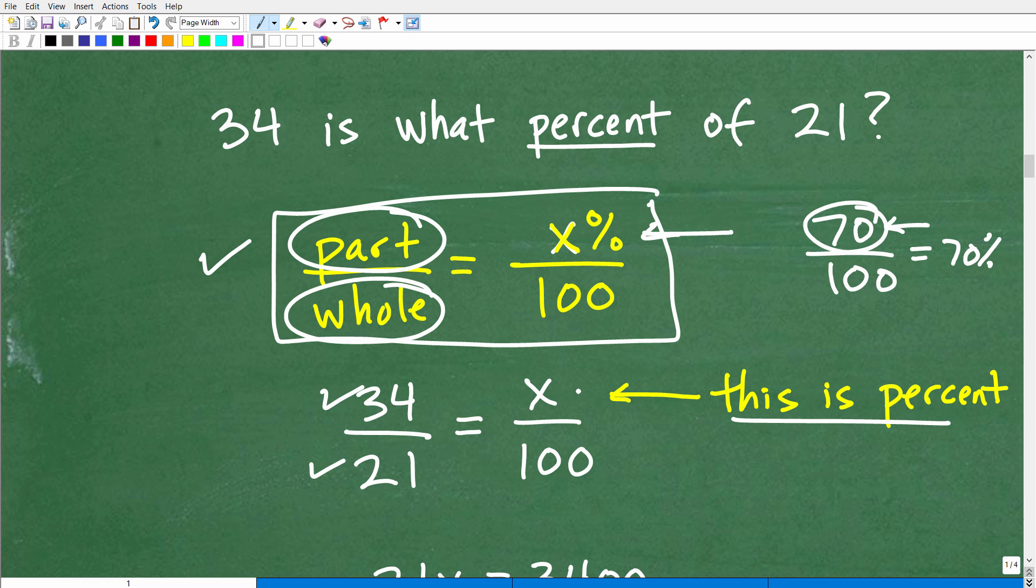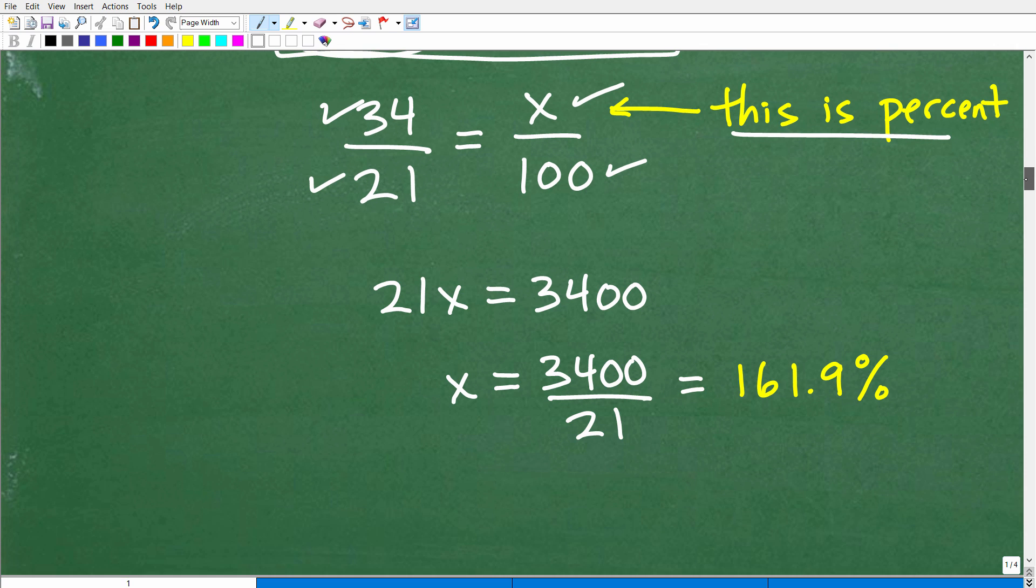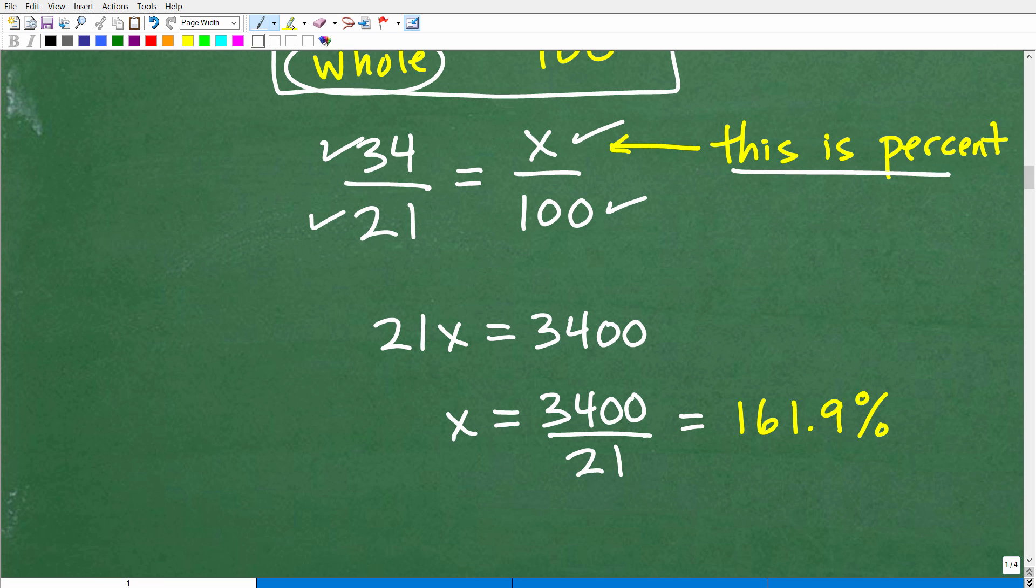This is the percent if I can solve for it. And then my denominator is 100, all right? So this is what we call like the proportion method to solve percent problems.